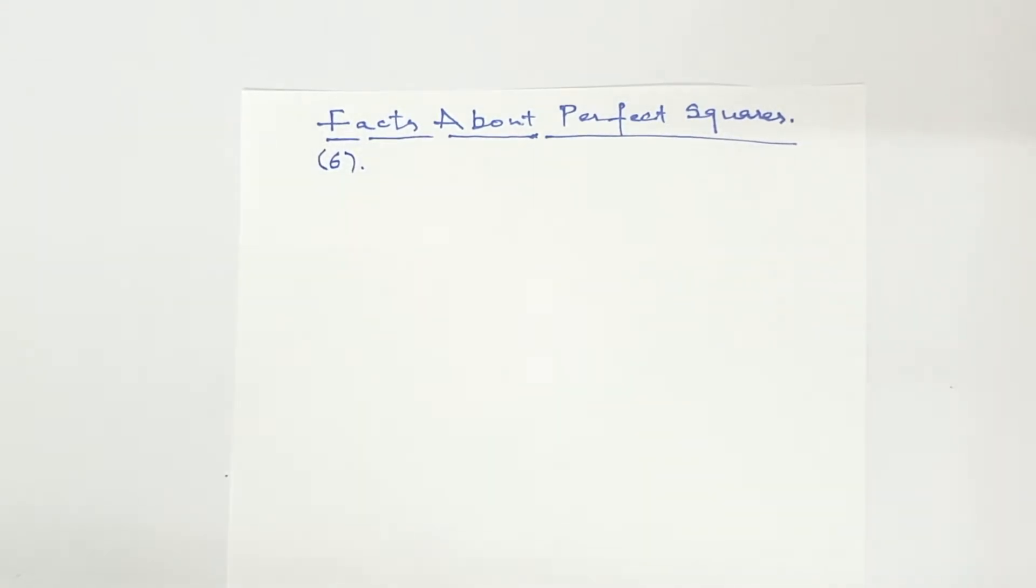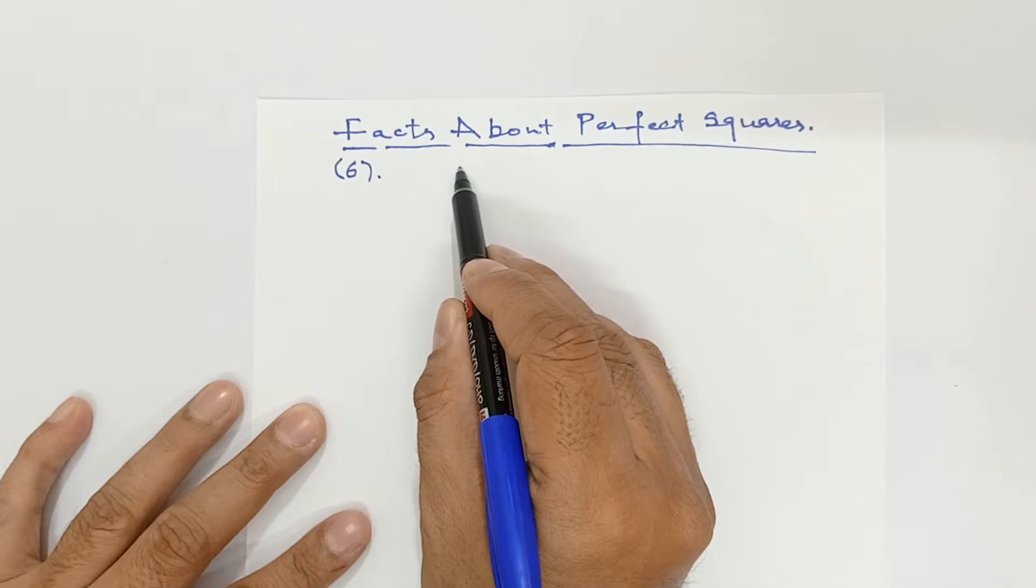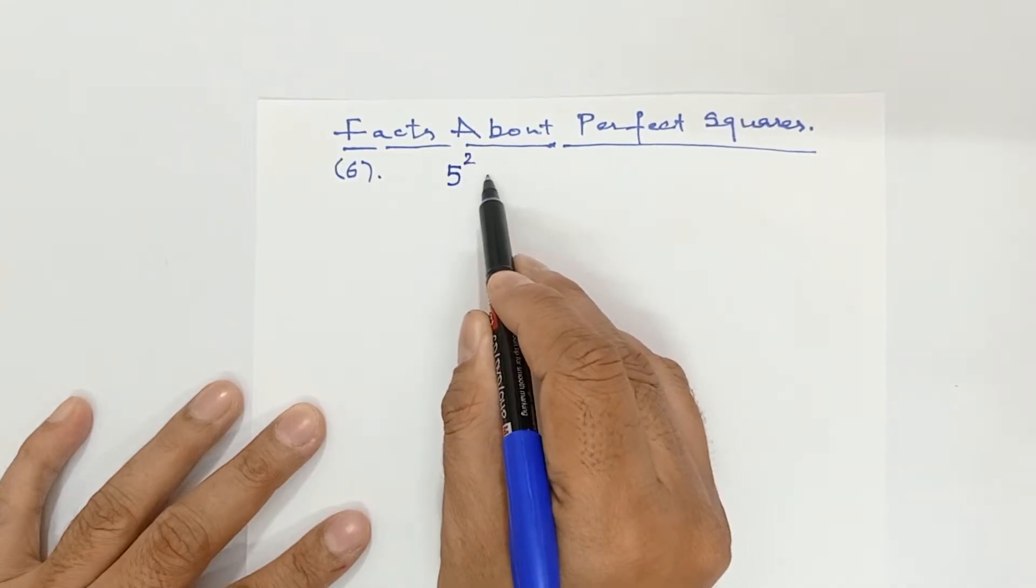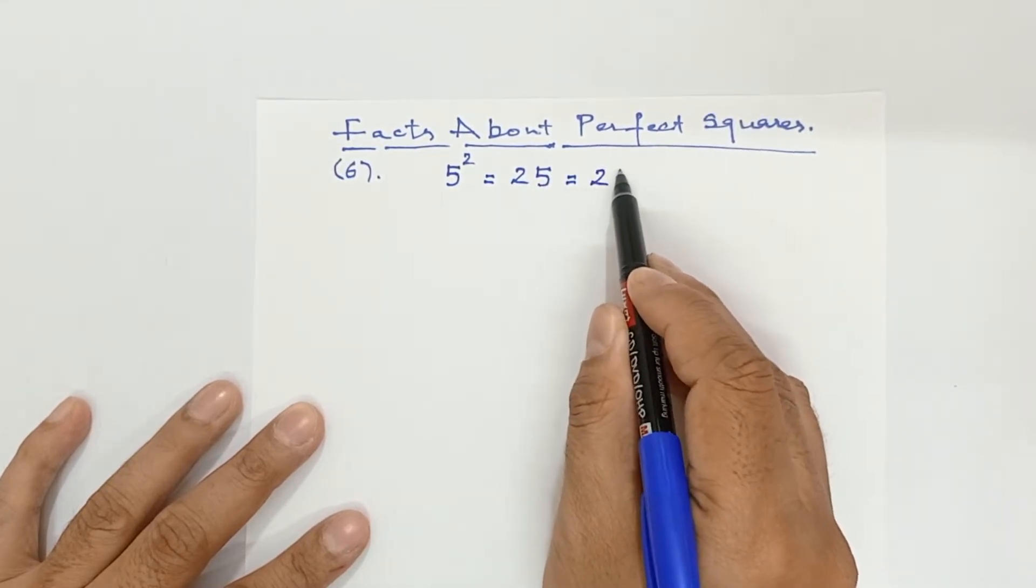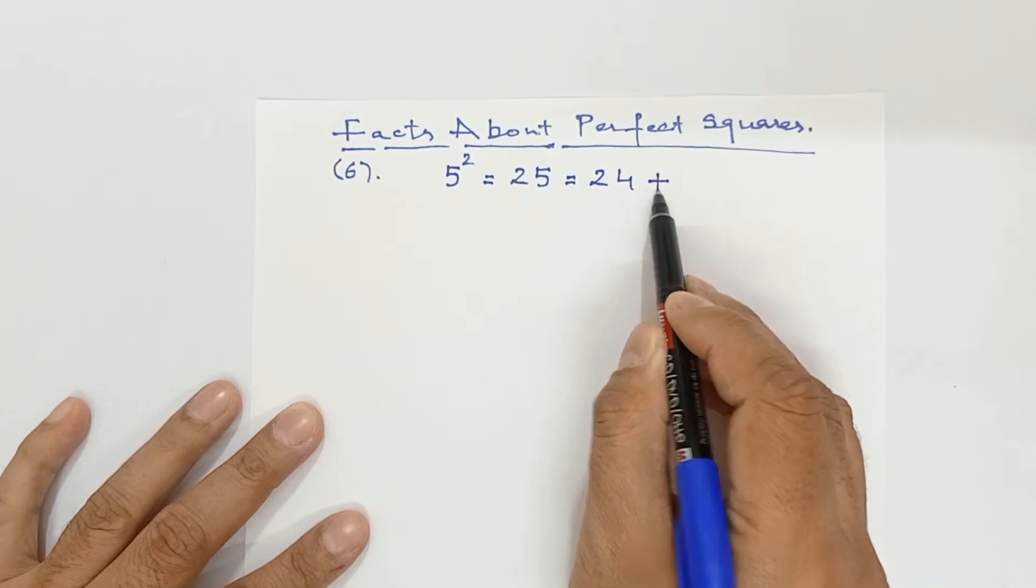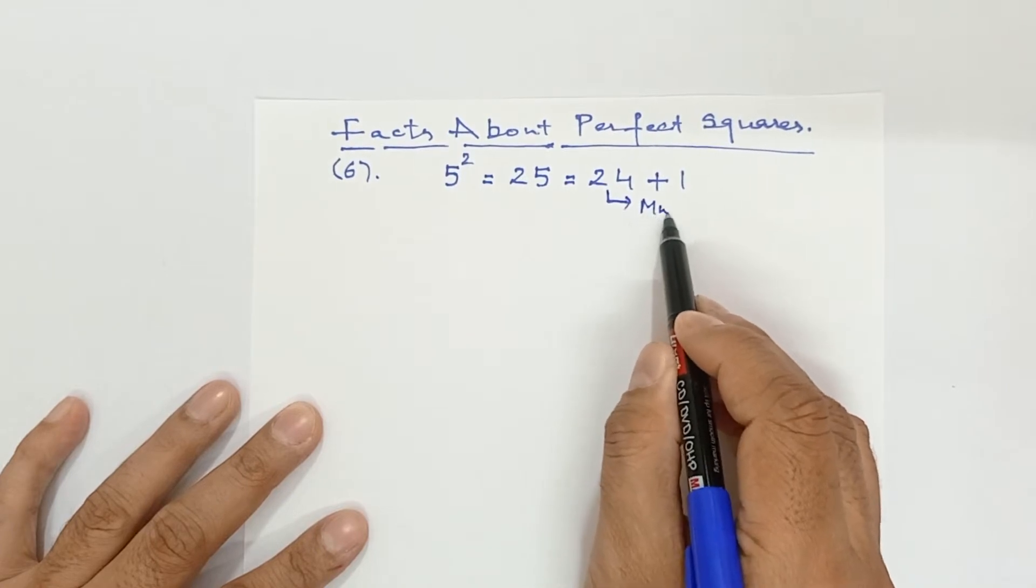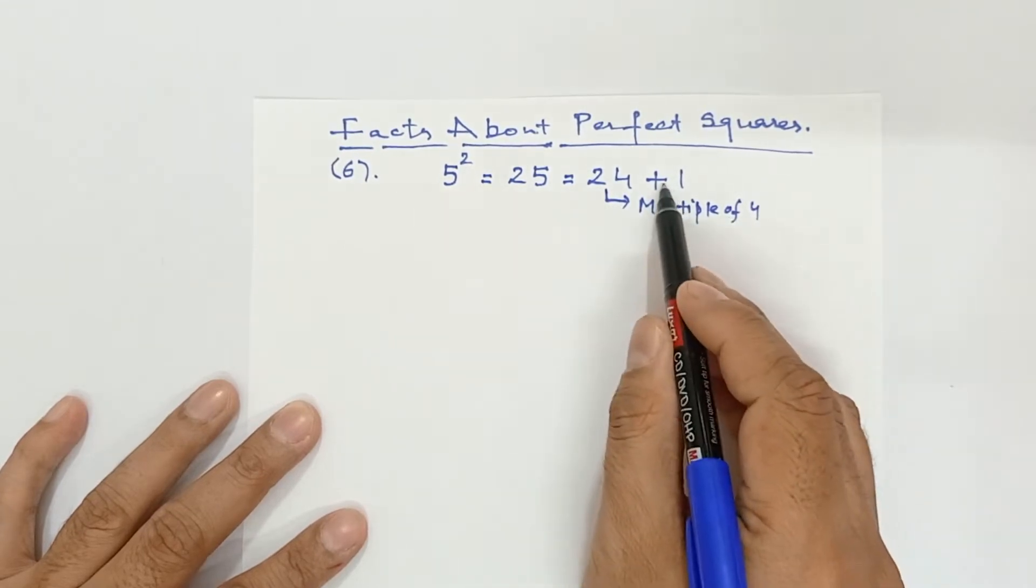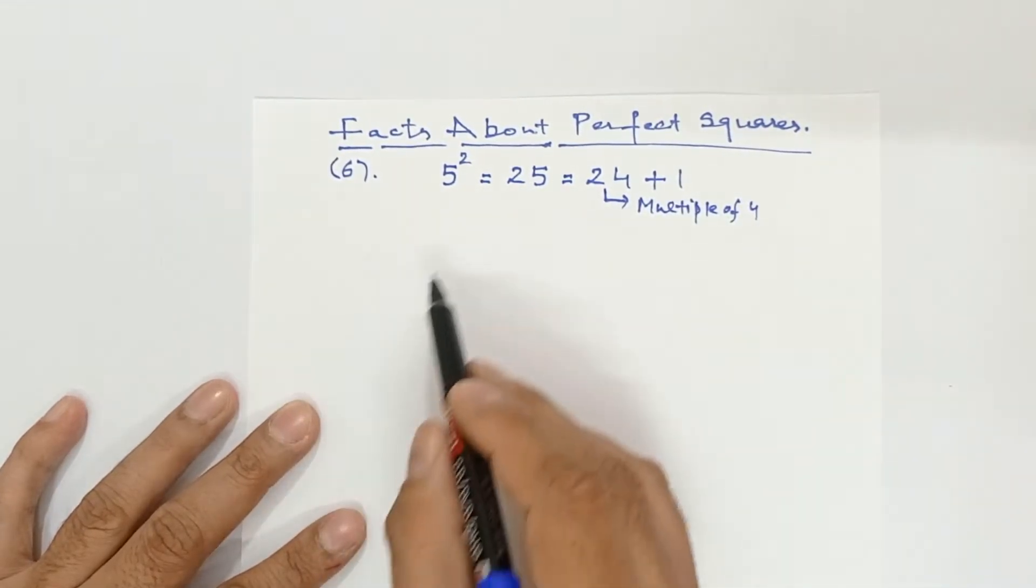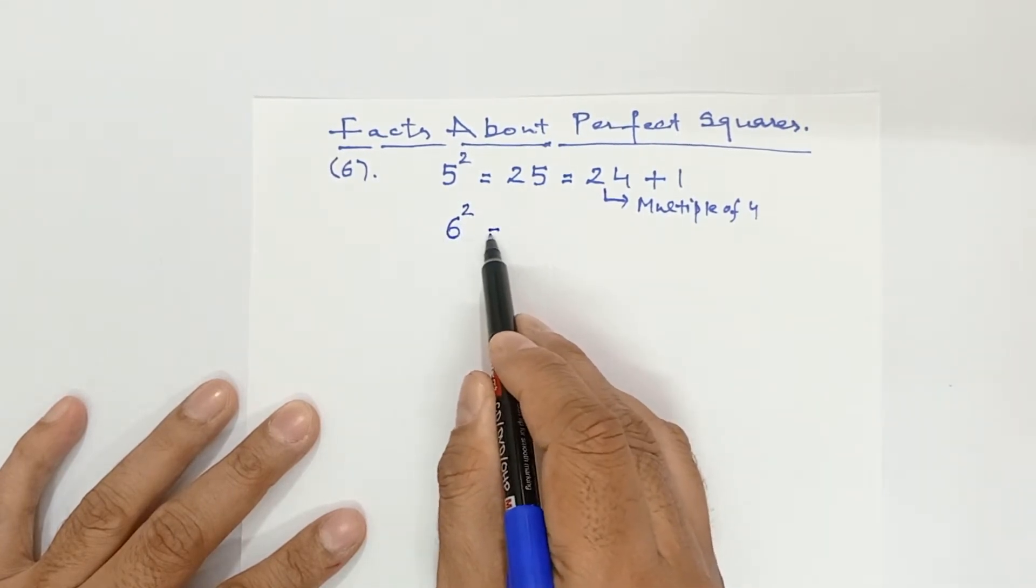Fact number 6, the square of any number other than 0 and 1. Suppose I take any other number other than 0 and 1, like I have taken 5 square. So 5 square is equal to 25. Now 25 can be written as 24 plus 1. So 24 is here a multiple of 4, and plus 1 means multiple of 4 has exceeded by 1, exceeded means increased. I am taking another number 6. 6 square is equal to 36. So here 36 is a multiple of 4.